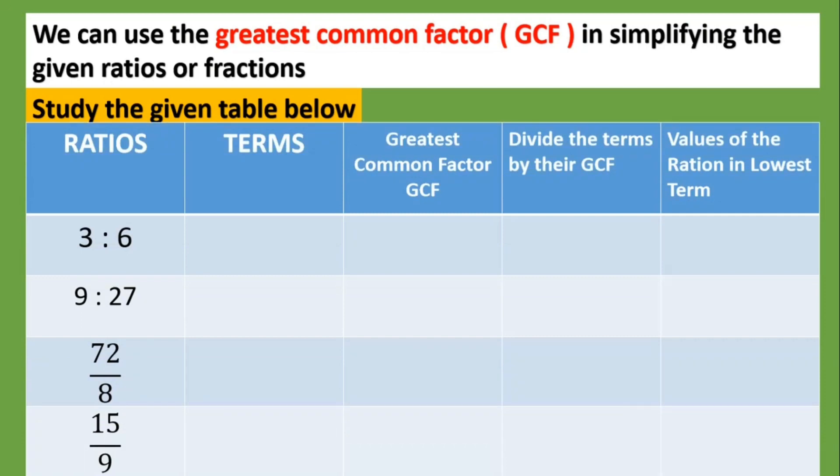So we have ratios, terms, greatest common factor or GCF, divide the terms by their GCF, and values of the ratio in lowest term. So the ratio of 3:6, the terms are three and six, and the greatest common factor is three. So let's divide the terms by their GCF. So three divided by three, and six divided by three. So the answer would be 1:2, which is the lowest term.